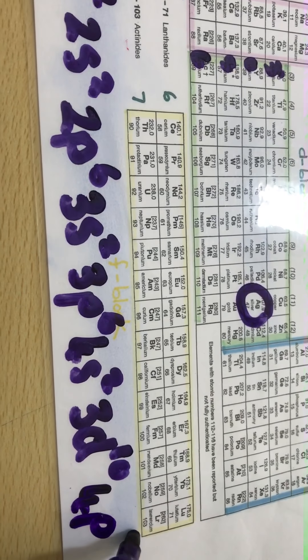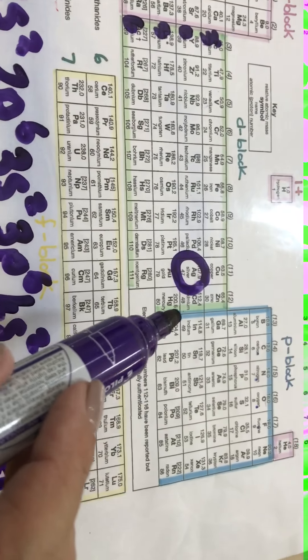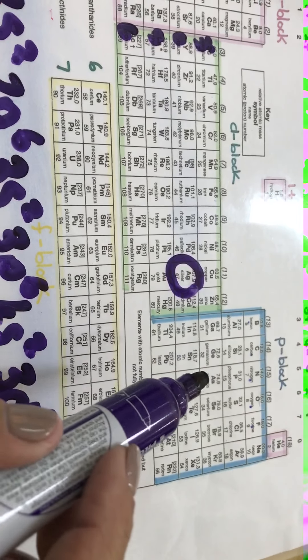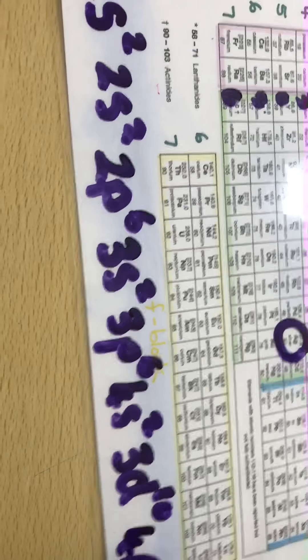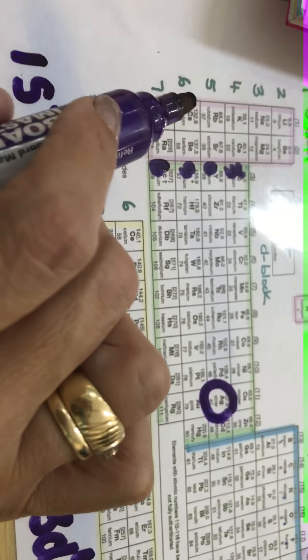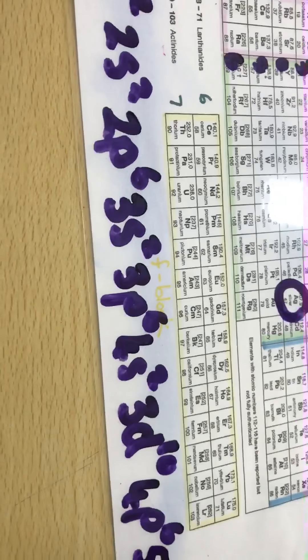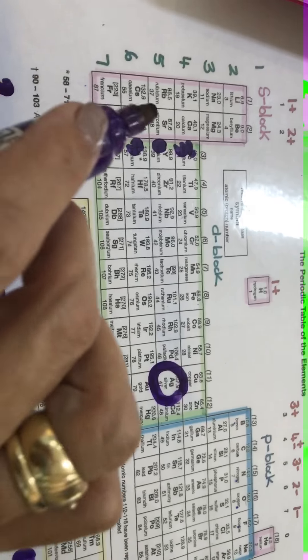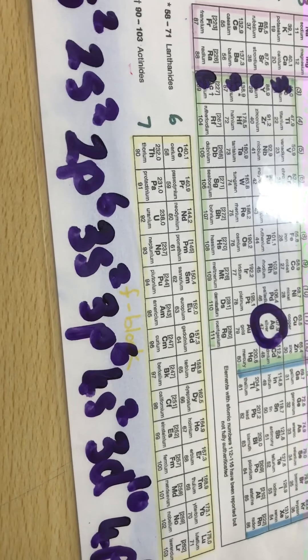So 4p is going to take six electrons again: 1, 2, 3, 4, 5, 6. Then I go to 5s. My 5s can take maximum two, and then from 5s I go to 4d—not 5d but 4d.